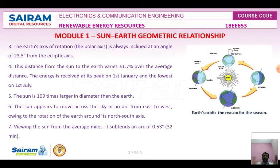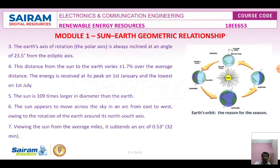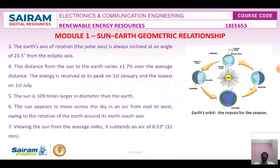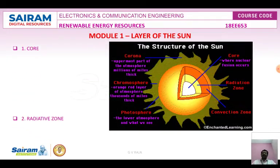Solar energy received is at its peak on January 1st and lowest on July 1st. The sun is 109 times greater than the Earth in diameter. The sun appears to move across the sky in an arc from east to west, owing to Earth's rotation around its north-to-south axis. The sun subtends an angle of 0.53 degrees (32 arc minutes) as viewed from Earth.